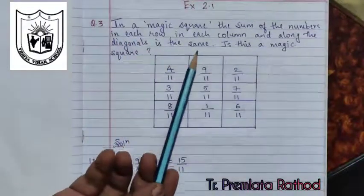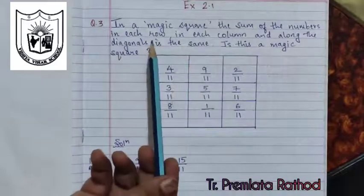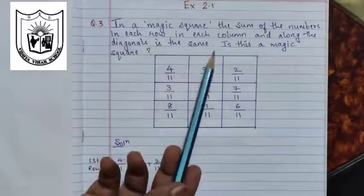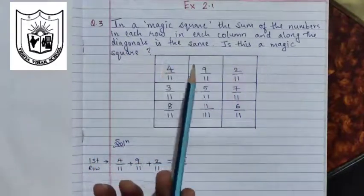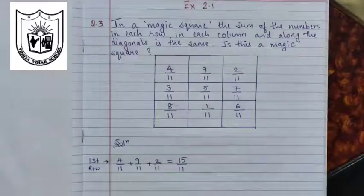In a magic square, the sum of the numbers in each row, in each column and along the diagonal is the same. Is this a magic square?